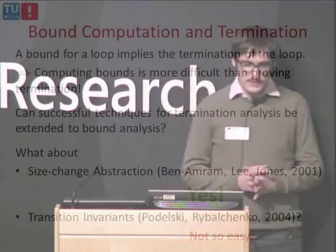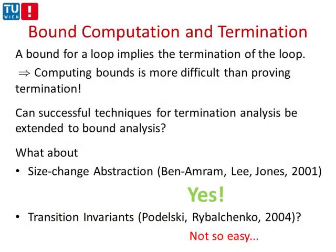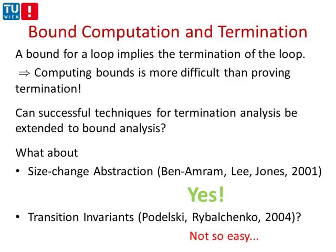If you can compute a bound for a loop, this implies termination of the loop, so computing bounds is more difficult than proving termination. It's a good starting point to ask if successful techniques for termination analysis can be extended to bound analysis. The recent years have seen two successful techniques: the earlier one is the size change abstraction, and the later one is transition invariants. We can use the size change abstraction, but using transition invariants for this purpose is not so easy.